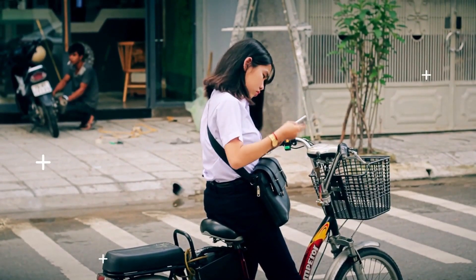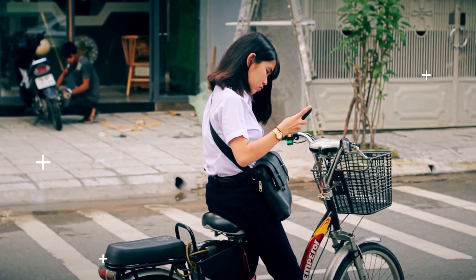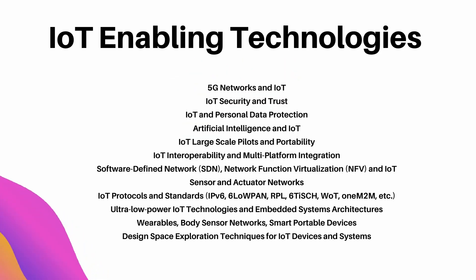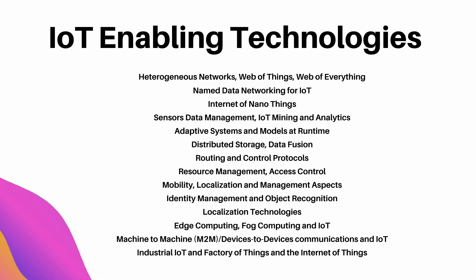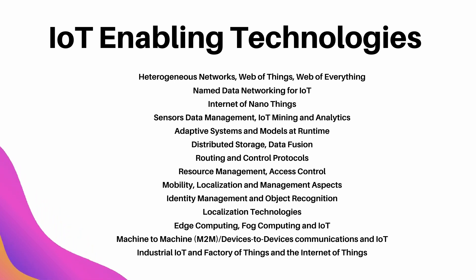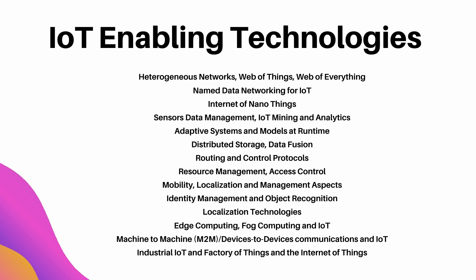Since IoT devices are energy-constrained devices, there is a need for ultra-low-power IoT technologies and embedded system architectures to reduce energy consumption. Wearable body sensor networks and smart portable devices need to be developed, and architectures and designs are required for areas like healthcare and logistics. IoT devices require very little memory, low energy consumption, and very low battery capacity, so designing a proper IoT system is still challenging.